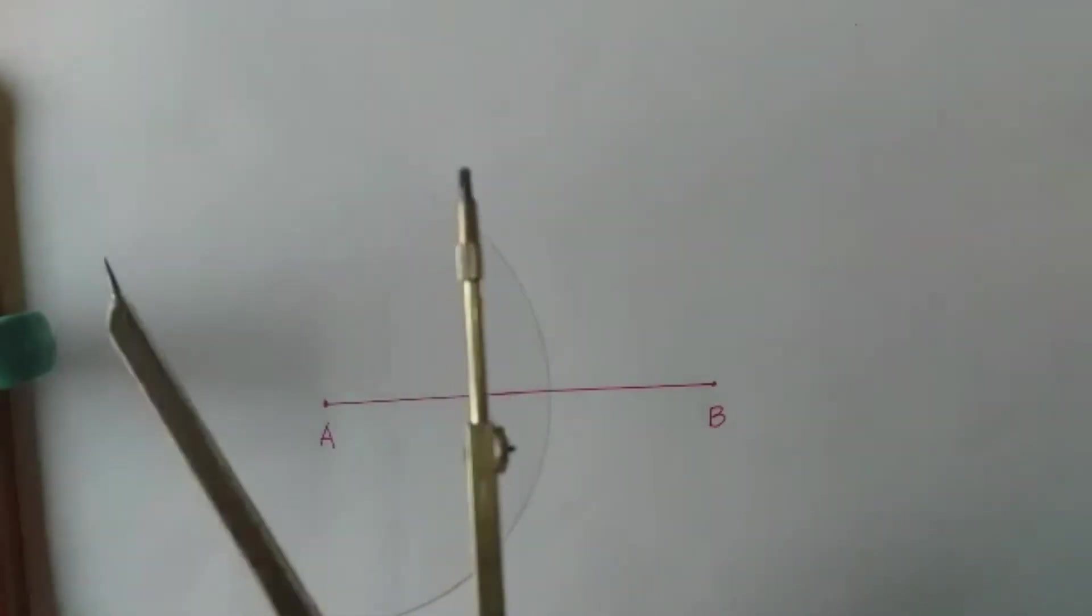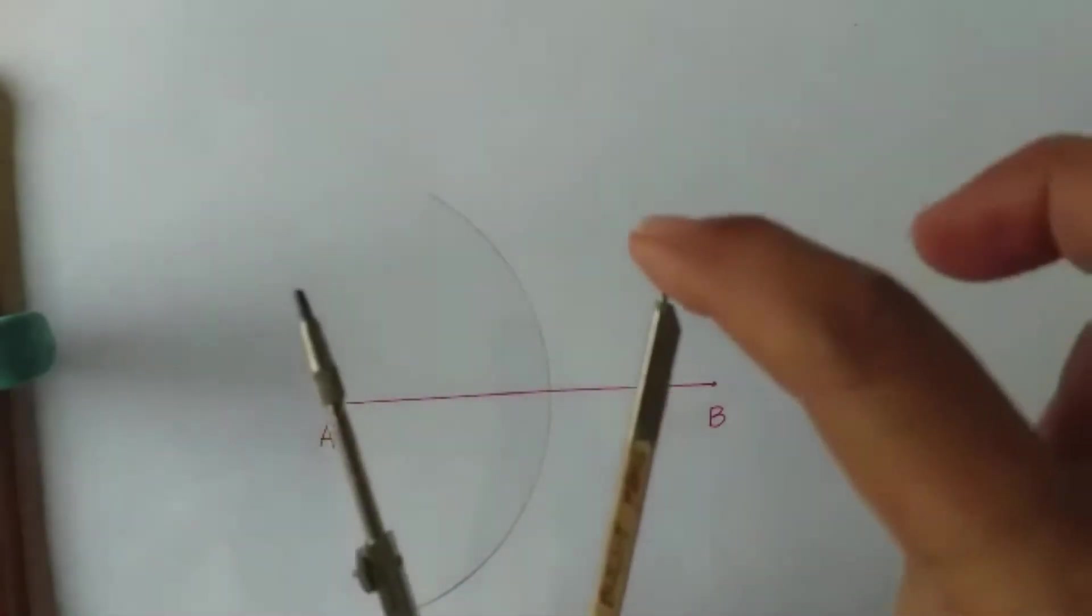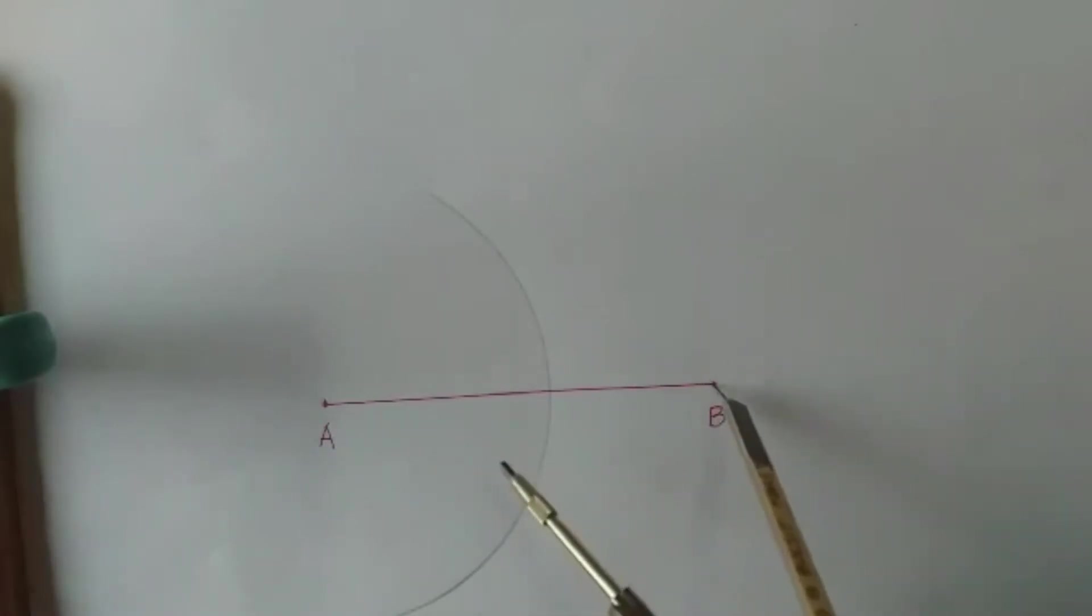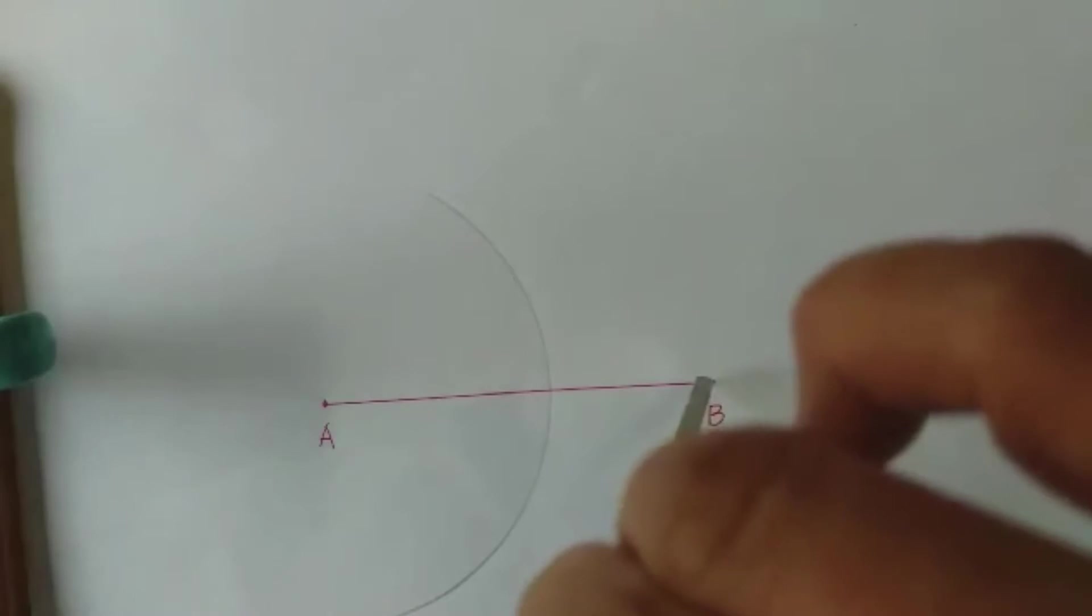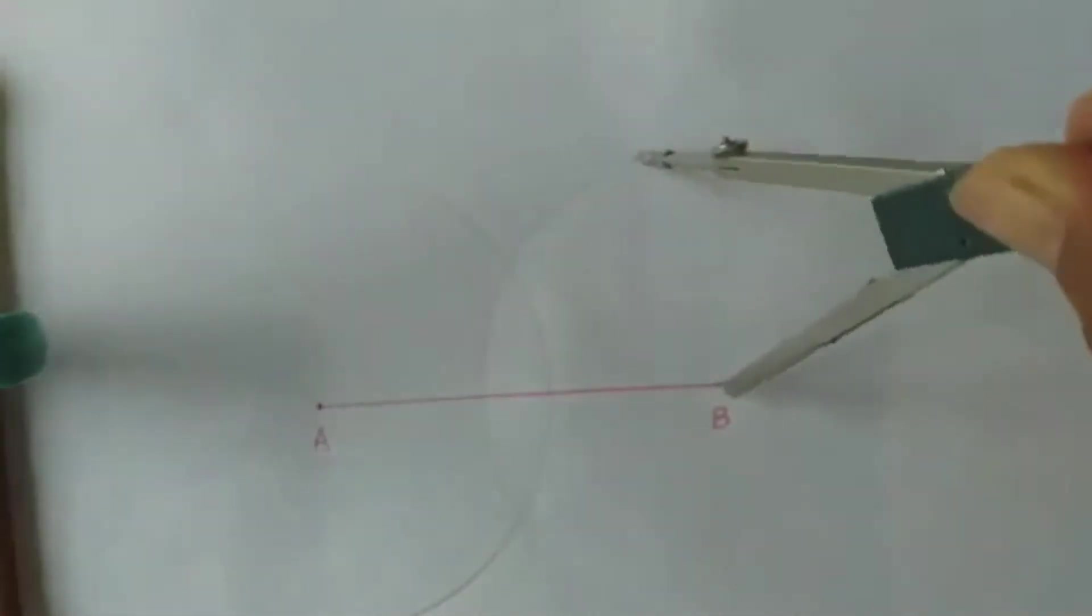With the same compass opening, place now the compass point at point B, just the same, intersecting segment AB and the previous arc.